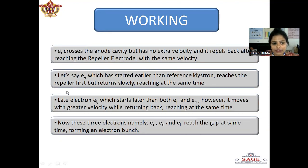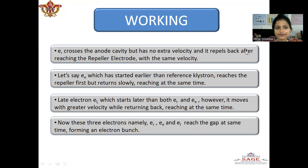How ER, EL and EE works: ER that is the reference electron crosses the anode cavity but has no extra velocity and it repels back after reaching the repeller electrode with the same velocity. The early electron which has started earlier than the reference electron reaches the repeller first but returns slowly reaching at the same time. The late electron which starts later than both ER and EE, however, it moves with a greater velocity while returning back reaching at the same time.